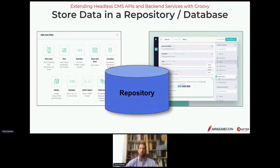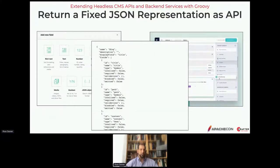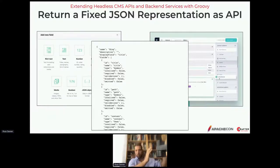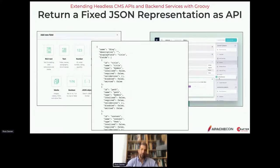When a consumer wants to pull content, they go and pull it via an API and what they get back is typically JSON. With most headless CMS platforms, the structure you create as your content definition really dictates the structure you get back in terms of the JSON, and we'll talk about why that's a challenge later.